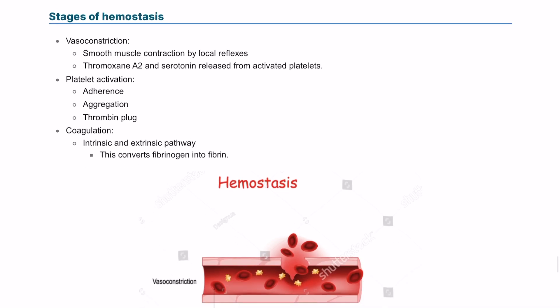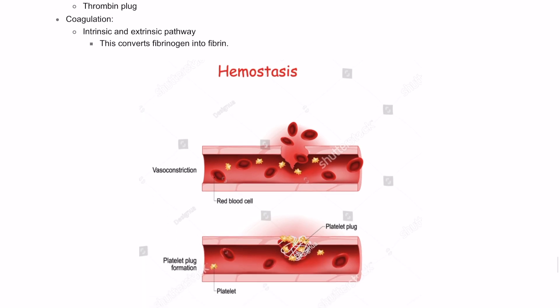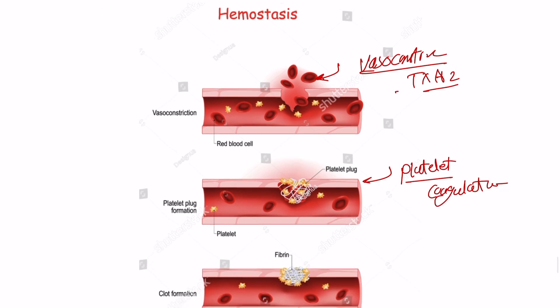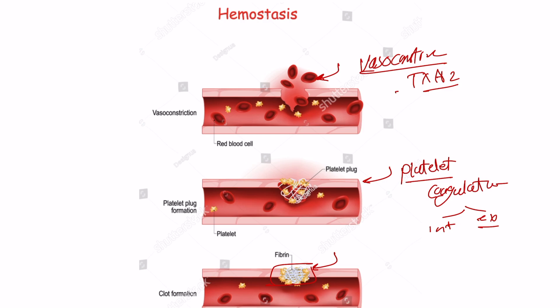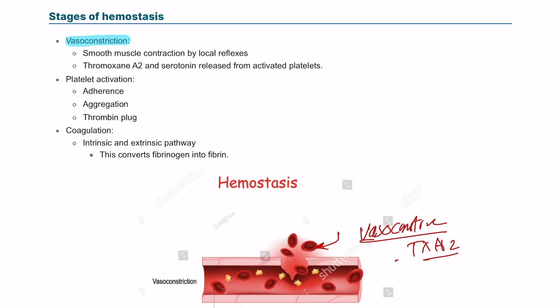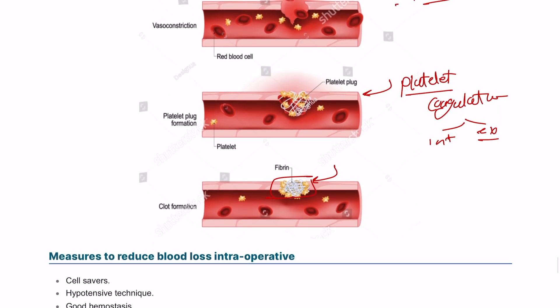The stages of hemostasis: hemostasis starts with endothelial injury, followed by reactive vasoconstriction of the blood vessel due to release of thromboxane A2. Then the platelets will adhere to the endothelial surface, leading to activation of the coagulation cascade. Stimulation of the intrinsic and extrinsic systems will lead to formation of fibrin-rich blood clot or thrombus. It starts by vasoconstriction due to smooth muscle contraction, then platelet adherence, aggregation, thrombin plug, and activation of the intrinsic and extrinsic pathways.